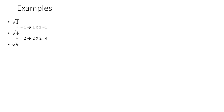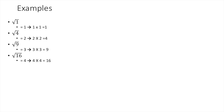Square Root of 9 is 3, because 3 times 3 equals 9. Square Root of 16 is 4, because 4 times 4 equals 16. Square Root of 25 is 5, because 5 times 5 equals 25.